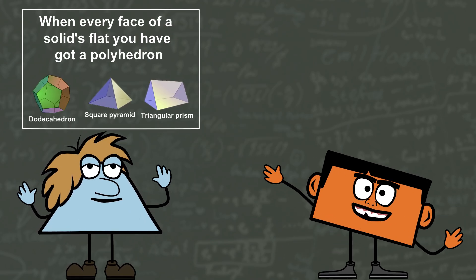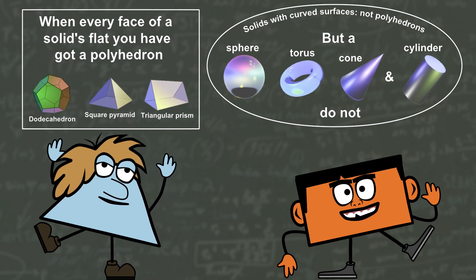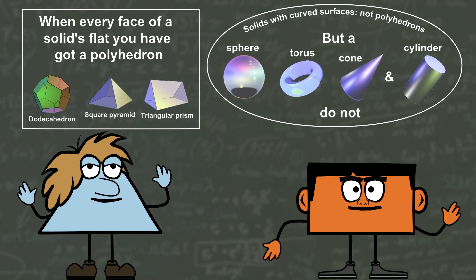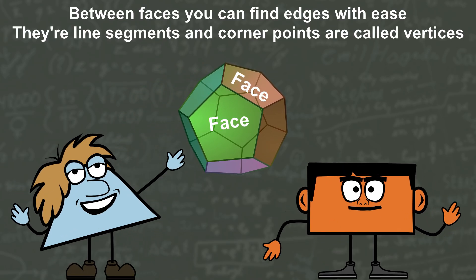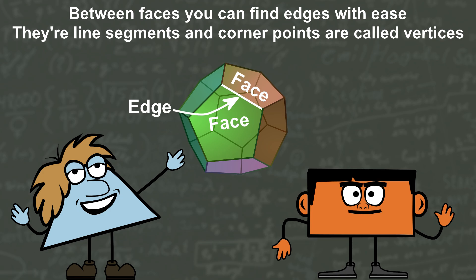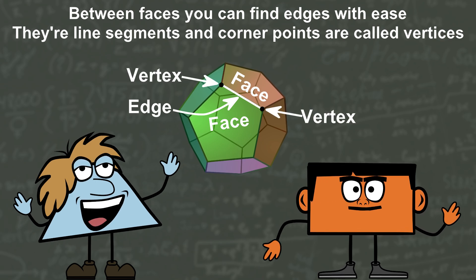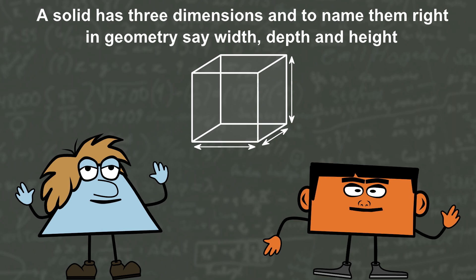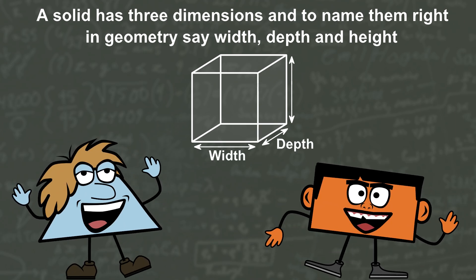A solid has three dimensions and to name them right, in geometry say, with depth and height.